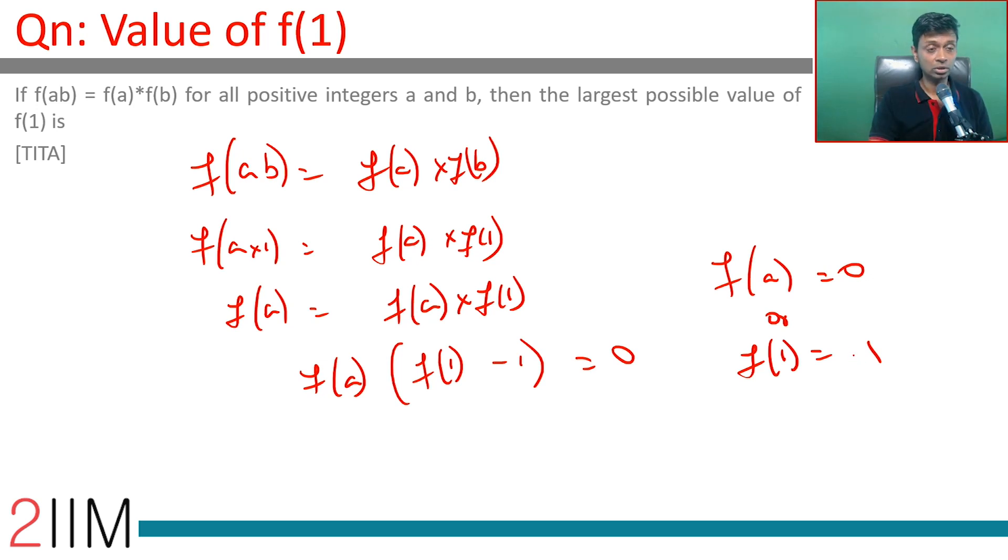Either this could be a constant function that f of all values is 0, then f of a into b will be equal to f of a into f of b, in which case f of 1 will also be 0, or f of 1 is 1.